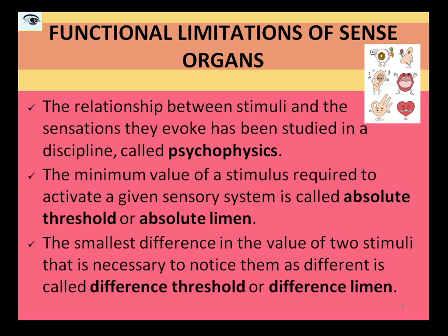For instance, taking the example of our eyes — our eyes cannot see things that are too bright or too dim. Our ears cannot hear things that are too soft or faint, or that are too loud. This is also true for the other sense organs. Basically, as human beings we function within a limited range of stimulation only, and even when a stimulus needs to be noticed by a sensory receptor, it needs to have an optimal intensity or magnitude.